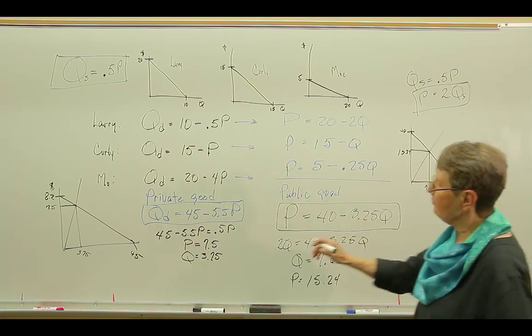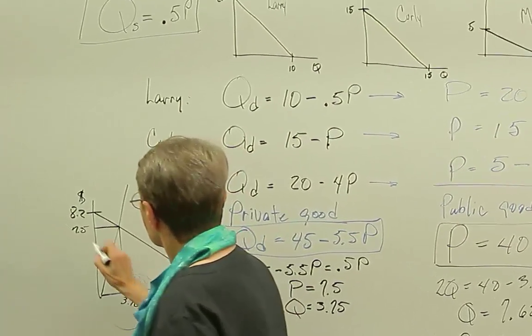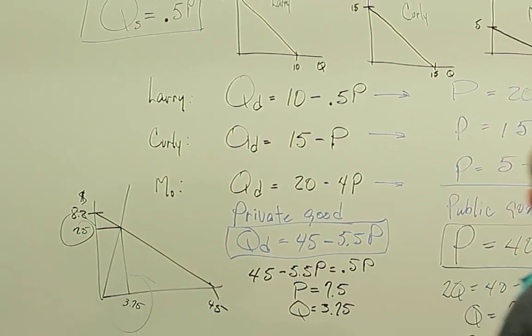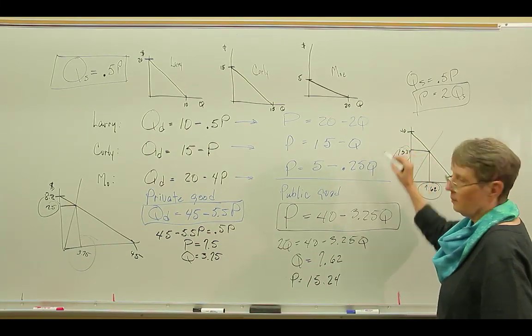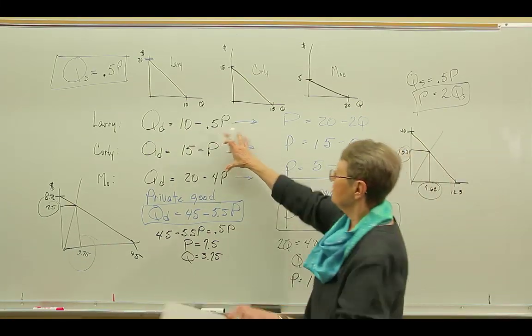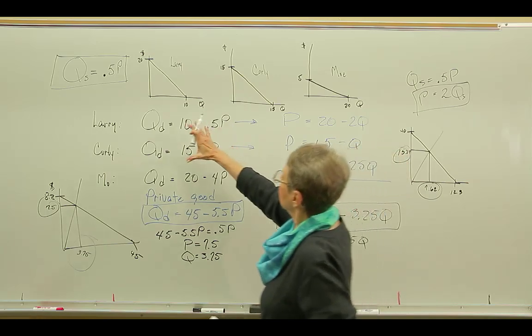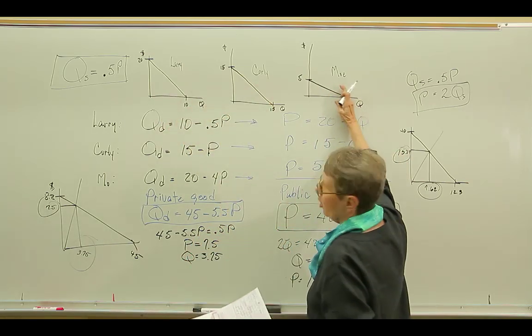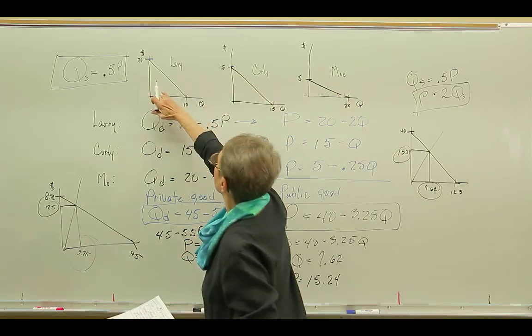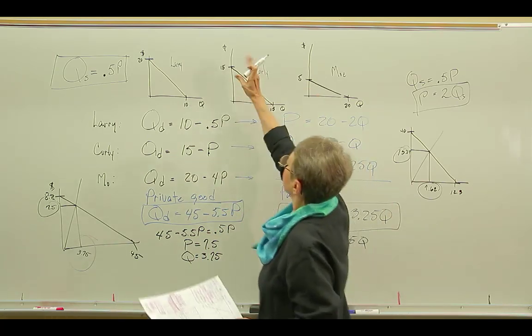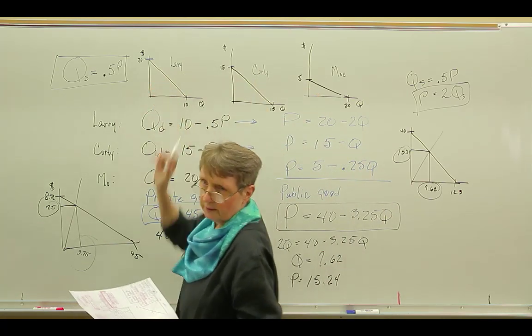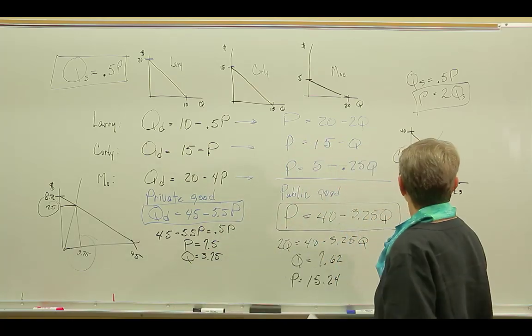So you can see the difference if the good is a public good or a private good, using the very same demand curves. And again, because with a private good, you sum horizontally across a price. If it's a public good, you sum vertically across a quantity. And it gives us two different demands.